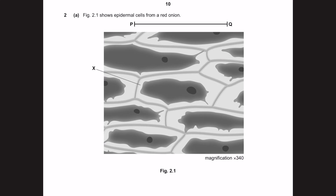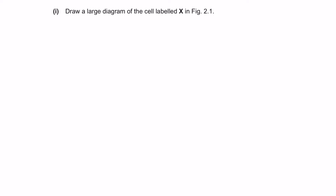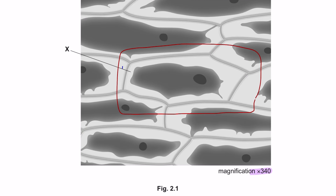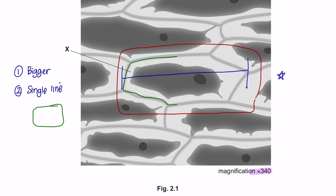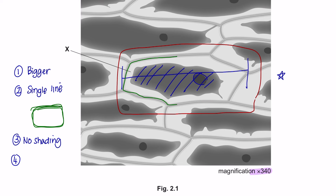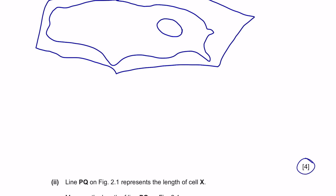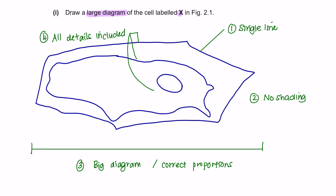Question 2, Part A: Figure 2.1 shows epidermal cells from a red onion. Part 1: Draw a large diagram of the cell labelled X. Your drawing should be bigger than the diagram given. Use a pencil and outline in a single line — no double lines and no shading. Include all details such as the nucleus, cell wall, and membrane. You are given 4 marks for this part.